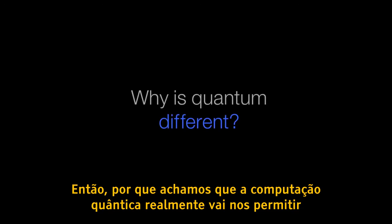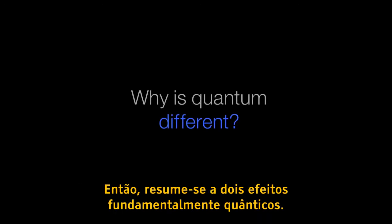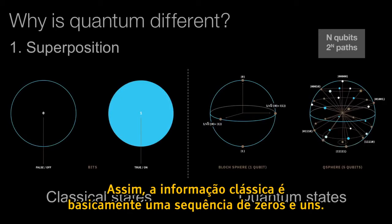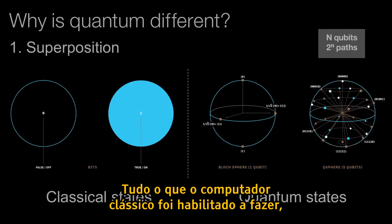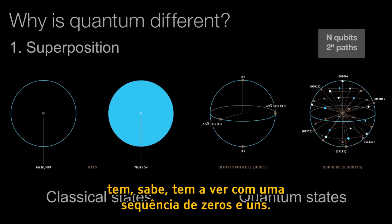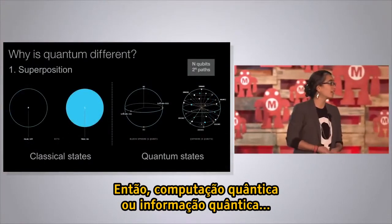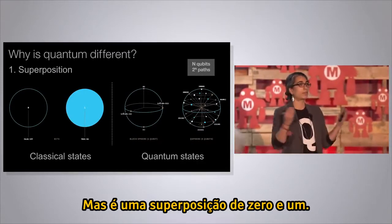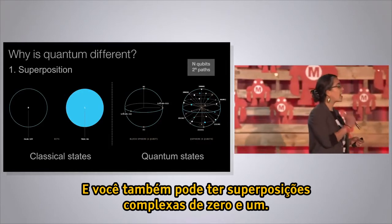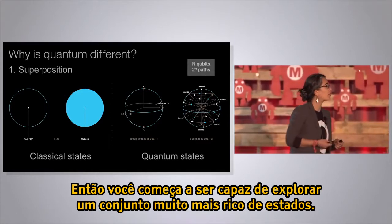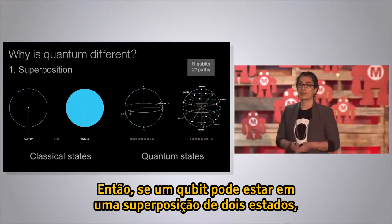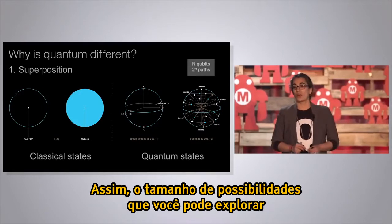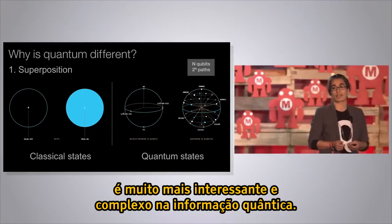So why do we think quantum computing will allow us to solve some of these problems we can't solve classically? It boils down to two fundamentally quantum effects. The first is superposition. Classical information is a string of zeros and ones. Quantum information has the property that states can exist in a superposition of zero and one — not just zero, not just one, but a superposition of both. You can also have complex superpositions. So one qubit can be in a superposition of two states, two qubits in a superposition of four states, three qubits in eight states. The possibility space you can explore is much more interesting and complex in quantum information.